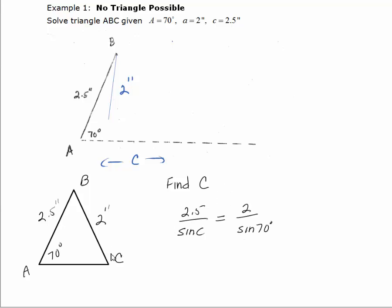So we've set up our Law of Sines. 2.5 over sine C is equal to 2 over sine 70. After cross multiplying and setting those cross products equal and dividing we get sine C equals 2.5 times sine 70 degrees divided by 2.